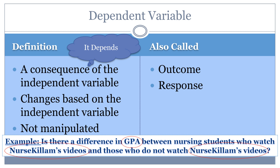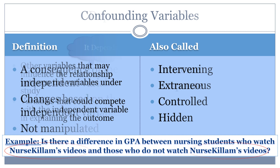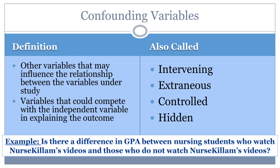Instead, a relationship can be identified but awareness of other factors needs to be discussed. When examining the relationship between the independent and dependent variables, researchers must also be aware of and control for as many confounding variables as possible. Confounding variables include anything that may confuse or confound the relationship that is being examined. It is because of confounding variables that non-experimental research cannot prove cause and effect relationships.